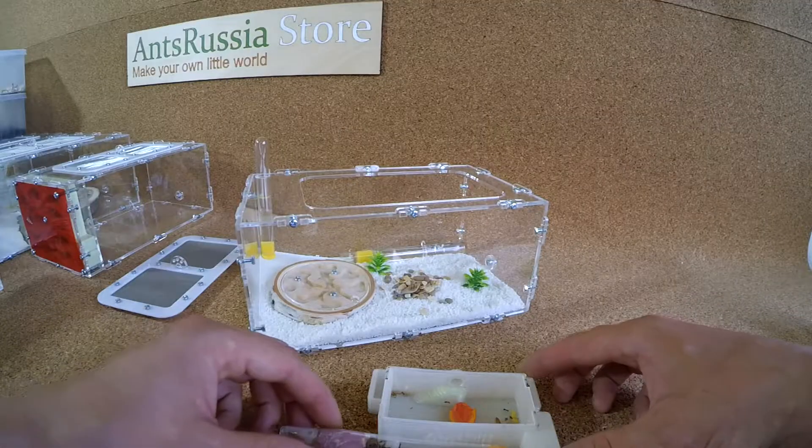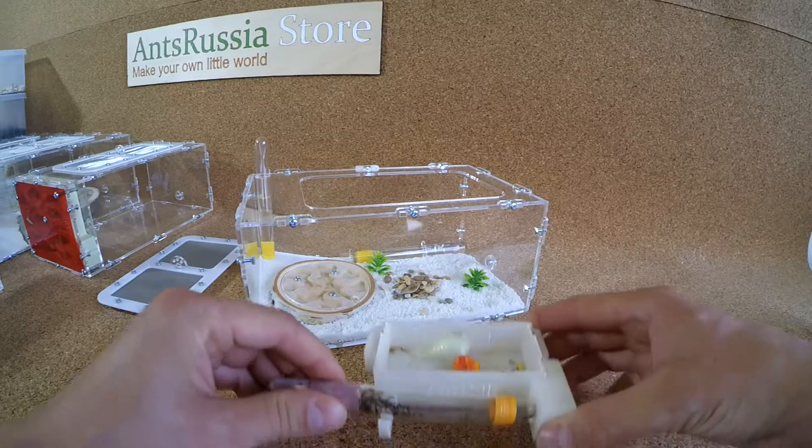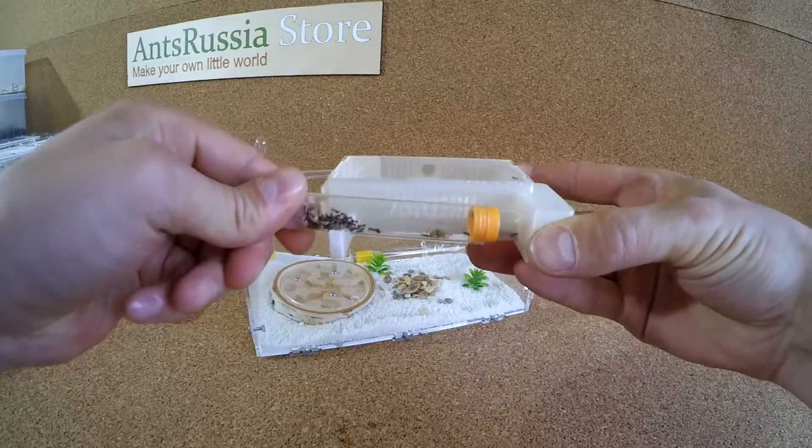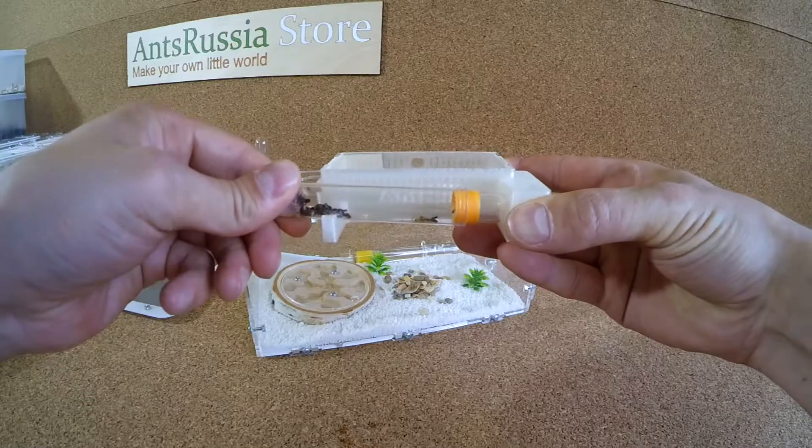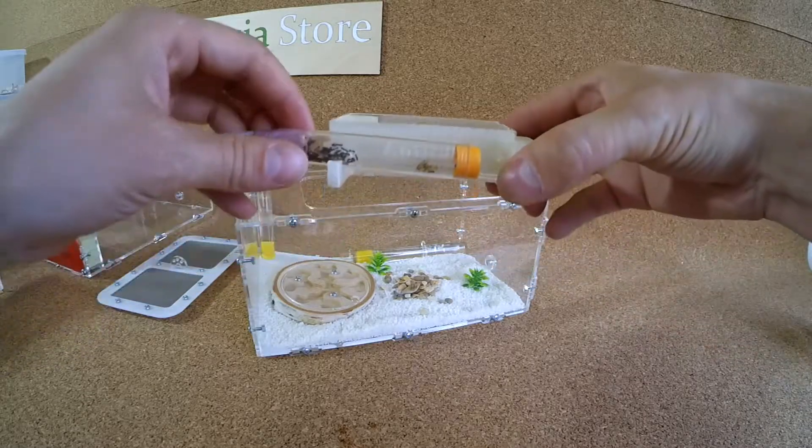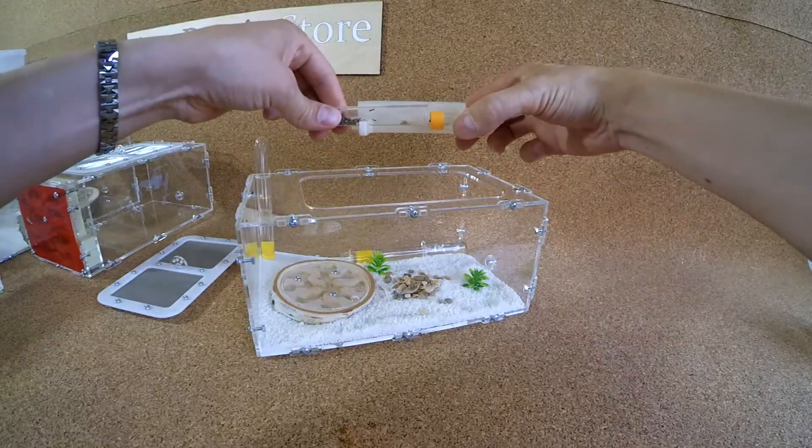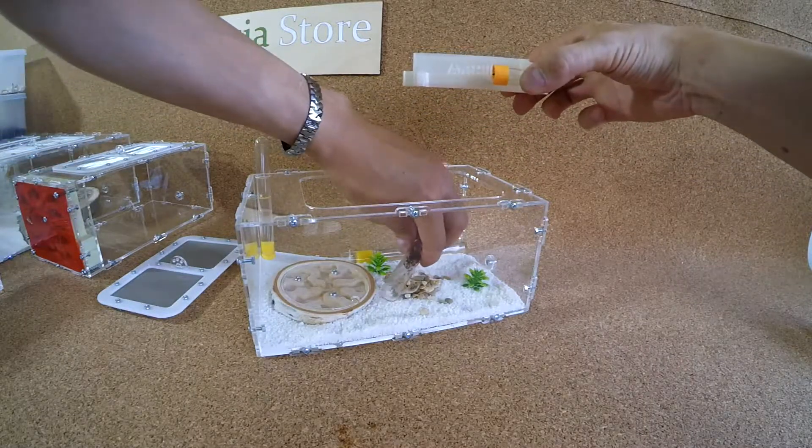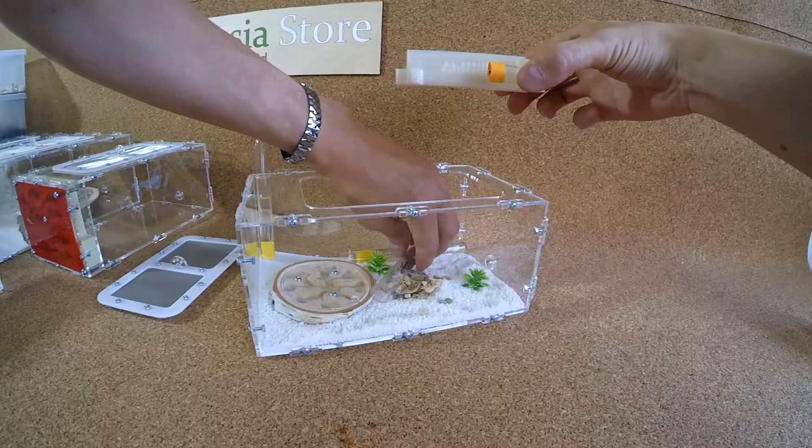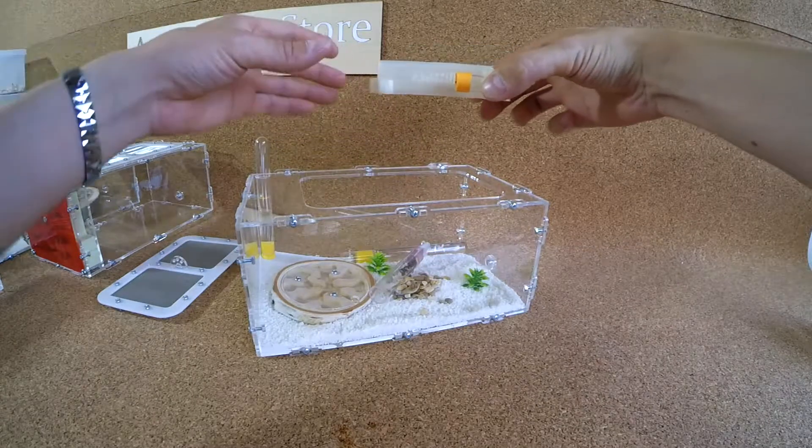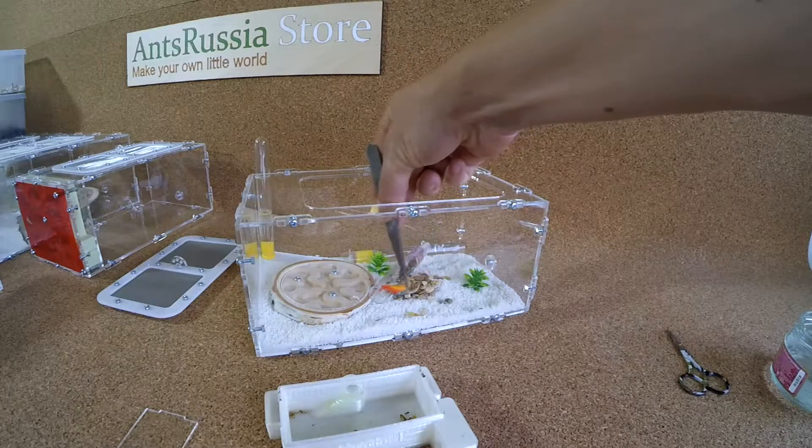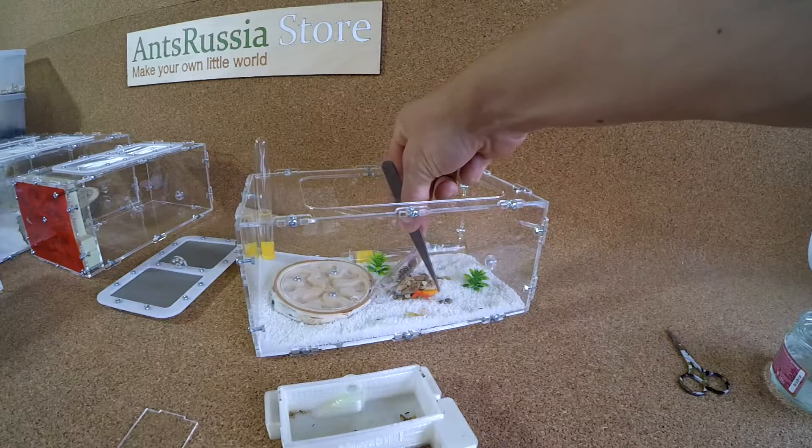We need to unplug test tube from the incubator and put it to the arena. To feed our pets with sugar syrup we need to lay down a small plate.